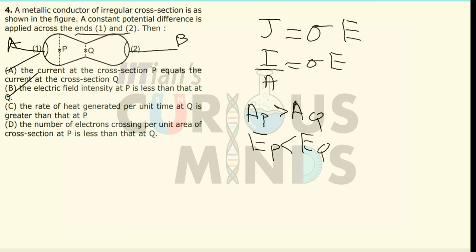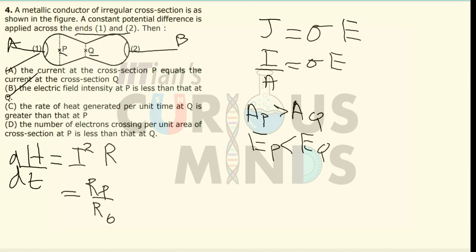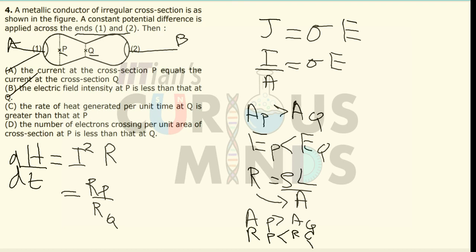Third, the rate of heat generation per unit time at Q is greater than at P. The heat generated is given by I squared R T, so the rate dH/dt equals I squared R. The current at both cross-sections P and Q remains the same, so we compare resistances. Since resistance equals rho L divided by A, resistance is inversely proportional to area. Since area at P is more than area at Q, resistance at P is less than resistance at Q. Therefore, heat generated at P is less than at Q, so option C is also correct.